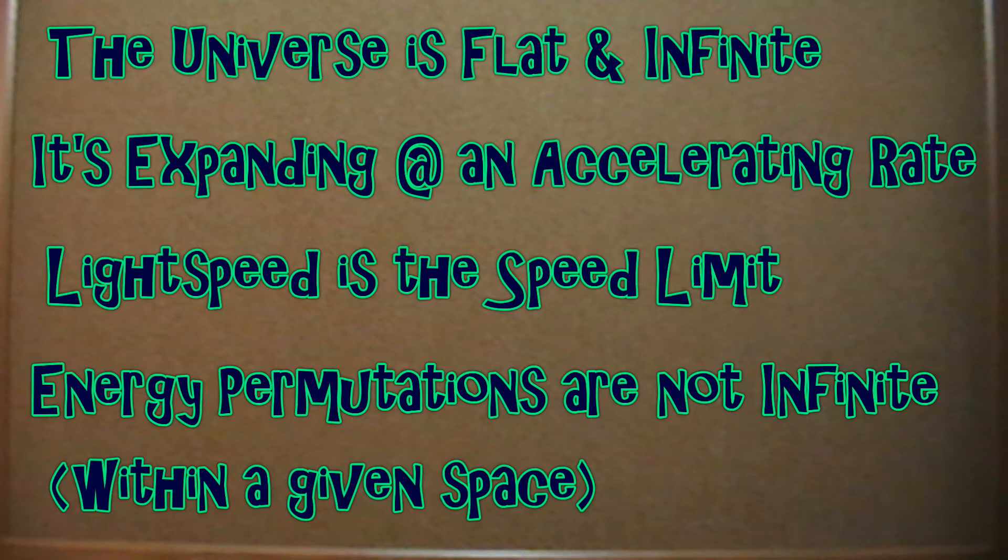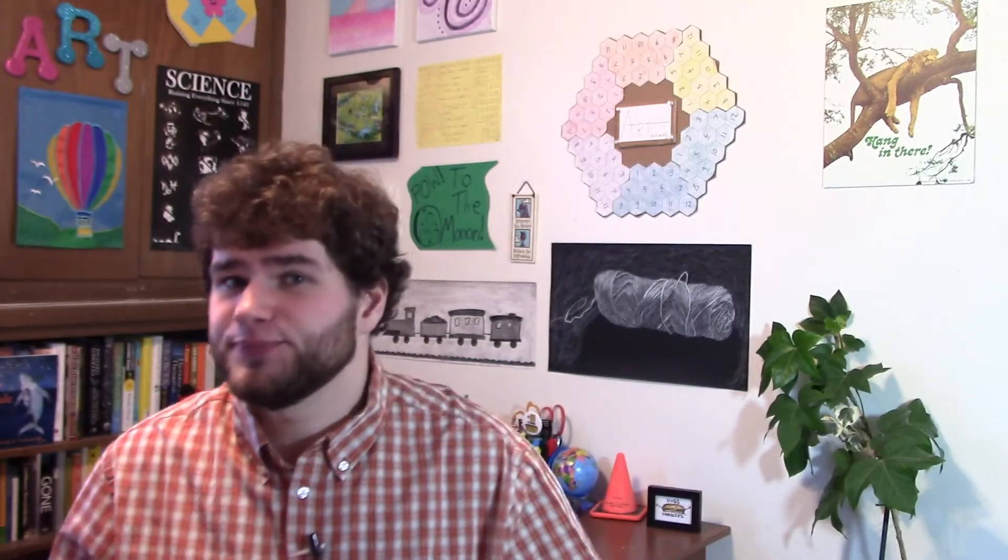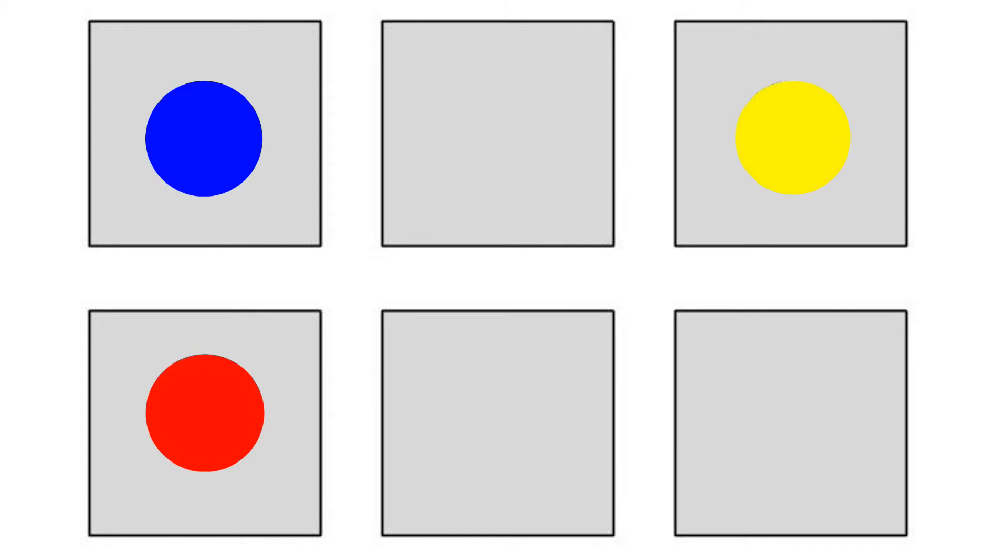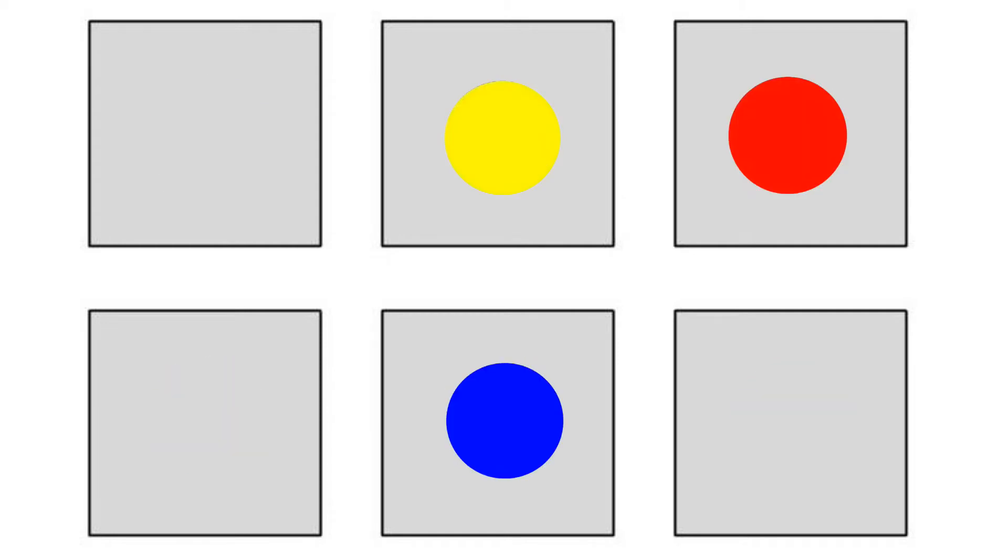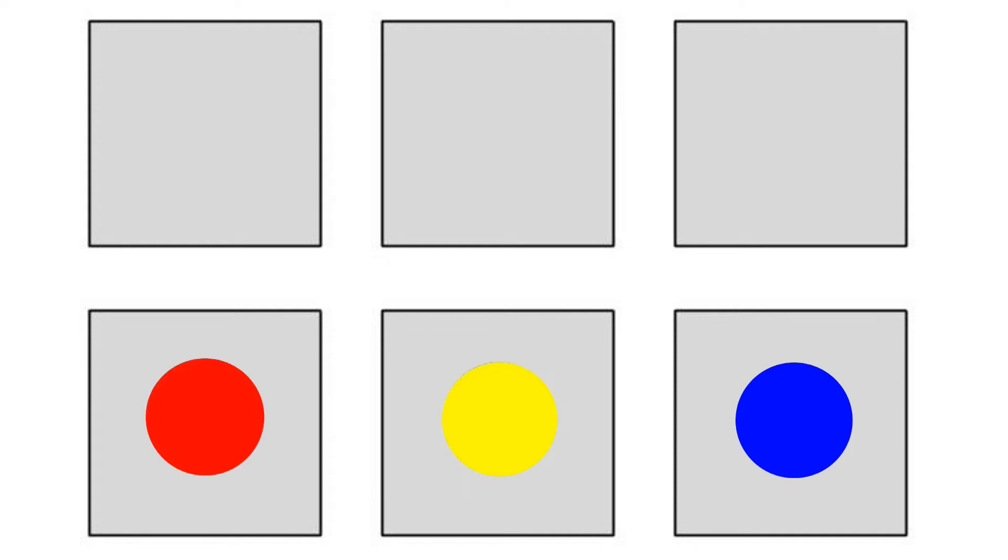Finally, number four, energy permutations are not infinite within a given space. What this means is that there are only a certain number of ways to arrange things like protons and electrons within a given chunk of space. For example, if you had six boxes and three colored balls, there are 120 ways in which you could arrange these items. These 120 different ways of arranging are called permutations. But instead of using boxes and balls, we're using Hubble volumes and fundamental particles. The math gives us an absurdly large number of permutations, and the chances of any one of them occurring are very, very small. But each permutation is still possible.